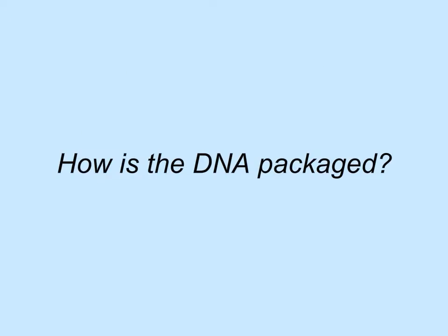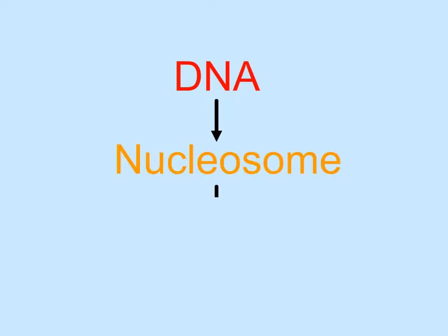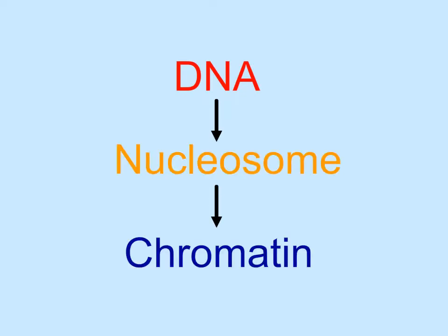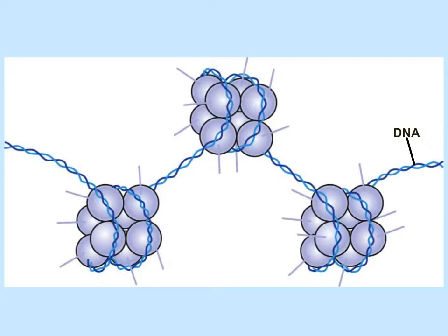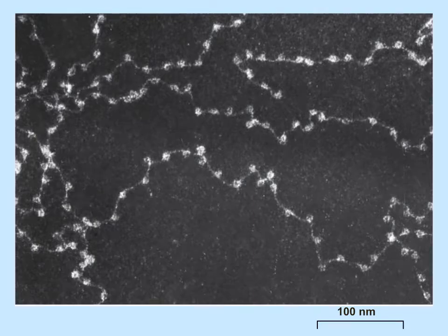Let's find out how the DNA is packaged. The DNA is first packaged into a nucleosome, which is then further packaged into chromatin. The double strands of DNA are wrapped twice around a collection of proteins called histones, which occur in a complex of eight molecules. The wrapped DNA plus the histone complex is called a nucleosome. This is a micrograph of DNA wrapped around histones — it looks like beads on a string, where each bead is a nucleosome.